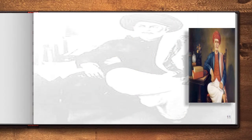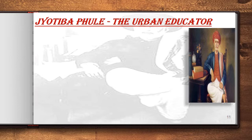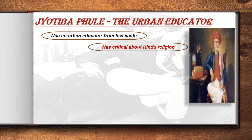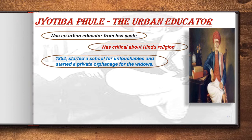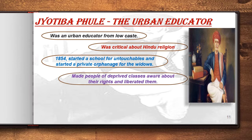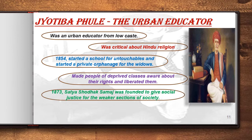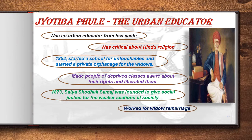Jyotirao Phule, also known as an ardent educator from a low caste, was critical of Hindu religion. In 1854, he started a school for untouchables and a private orphanage for widows. He made people of deprived classes aware of their rights and liberated them. In 1873, he founded the Satyashodhak Samaj to deliver justice for the weaker sections of society. These reform movements highlighted the importance of women by encouraging them to participate in the national movement.